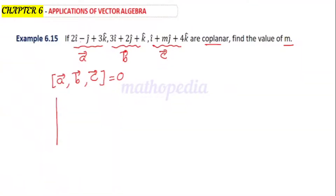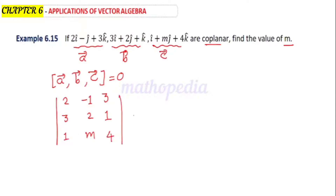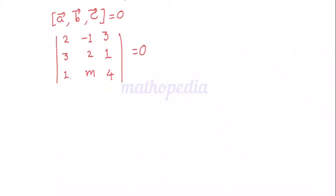The box product of a, b, c is the determinant of the coefficients of i, j, and k. From a vector: 2, −1, 3. From b vector: 3, 2, 1. From c vector: 1, m, 4. This determinant equals zero.